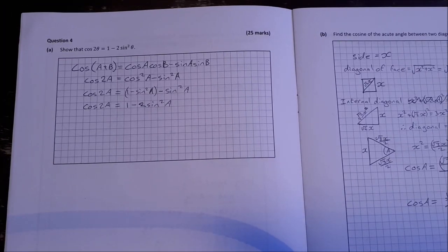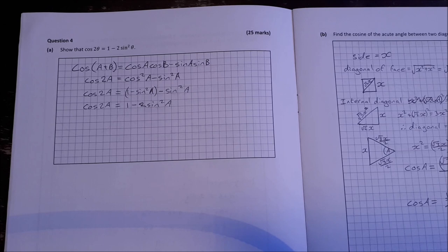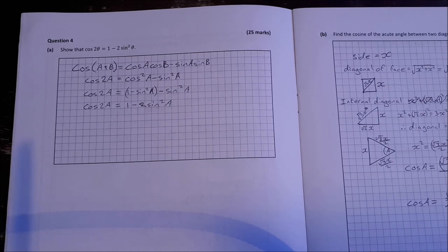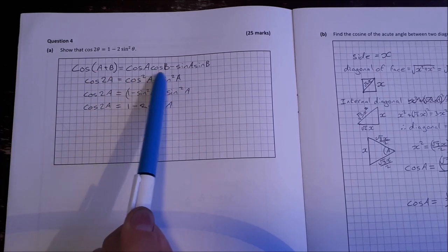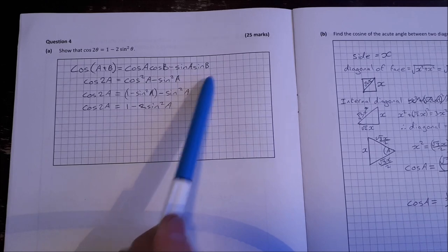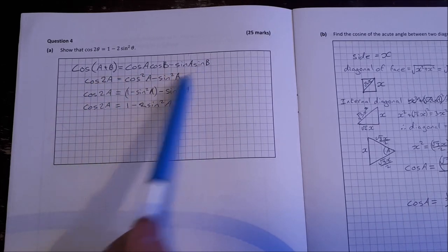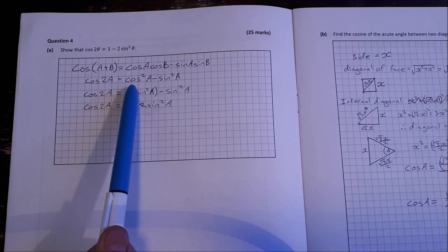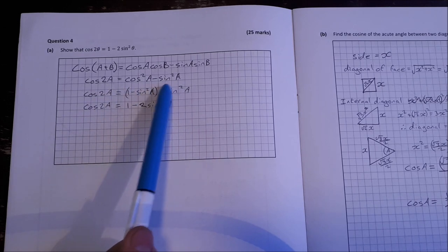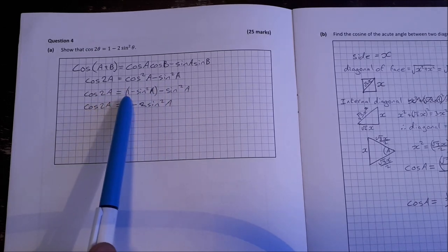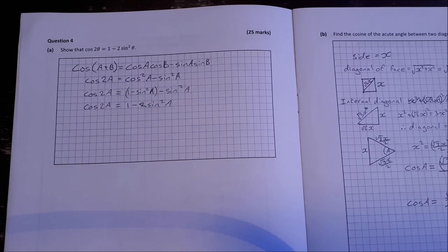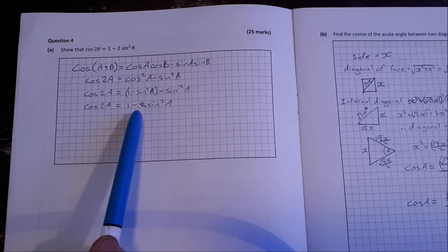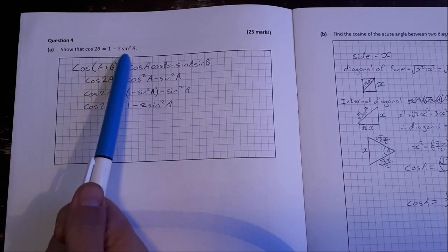Question 4. Show that cos 2 theta is equal to 1 minus 2 sin squared theta. So this is using your identities from the log tables. Cos of a plus b is equal to cos a cos b minus sin a sin b. a is equal to b in this case. So cos of 2a is equal to cos squared a minus sin squared a. So the cos of 2a is 1 minus sin squared a minus sin squared a. Letting cos squared equal to 1 minus sin squared. So that's 1 minus 2 sin squared a as required.